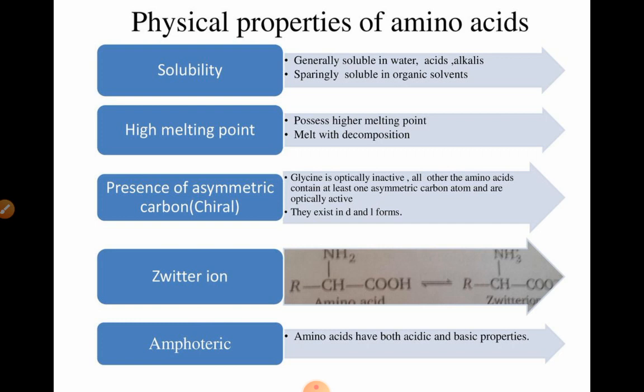Due to the presence of an asymmetric carbon atom, except glycine — glycine is optically inactive — all other amino acids contain at least one asymmetric carbon atom and are optically active. They exist in D and L forms.